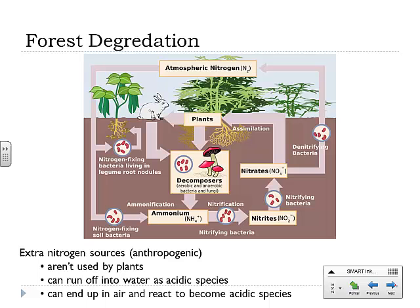What about forest degradation? How does acid rain lead to forest degradation? It has to do with extra nitrogen sources. Nature has the nitrogen cycle balanced, similar to the carbon cycle. But when extra nitrogen is fed in from anthropogenic sources, those extra sources can't be used by plants in the same way. They could end up in water as acidic species, making surface water more acidic, or get released into the air and react to become acidic species, contributing to more acid rain.